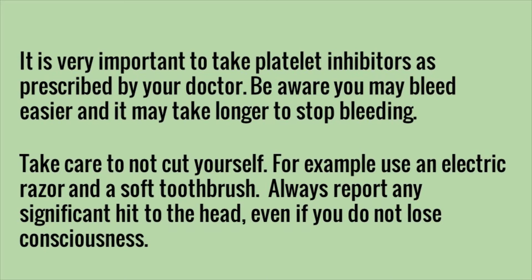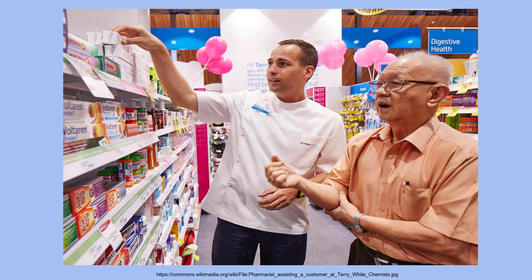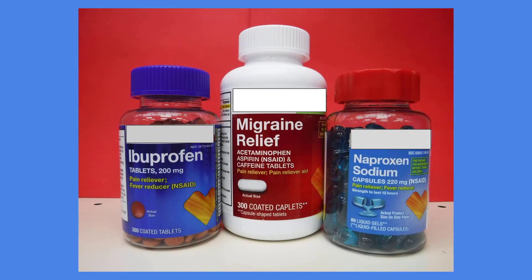It's very important to take platelet inhibitors as prescribed by your doctor. Be aware you may bleed easier and it may take longer to stop bleeding. Use an electric razor and a soft toothbrush. Always report any significant hit to the head, even if you do not lose consciousness. Check with your pharmacist before buying over-the-counter medications when you are on a platelet inhibitor like aspirin, Plavix, Brilinta, or Effient. Over-the-counter pain medications may cause stomach bleeding. Please avoid medications that contain ibuprofen or naproxen, such as Motrin, Advil, and Aleve. Also avoid over-the-counter medications that contain aspirin, as you do not want to take more than the dose prescribed by your doctor.